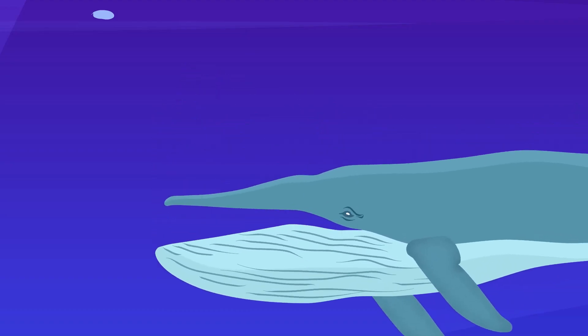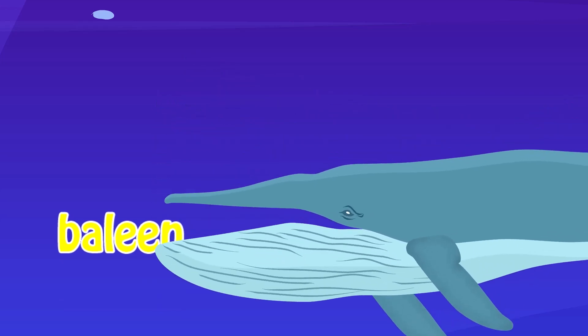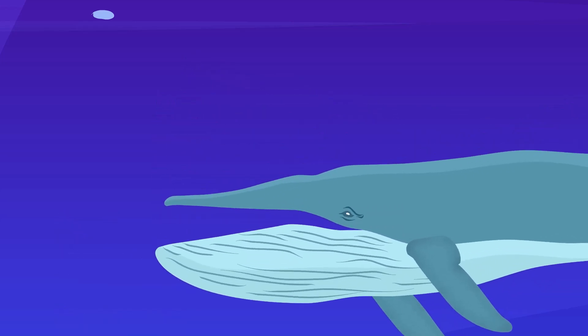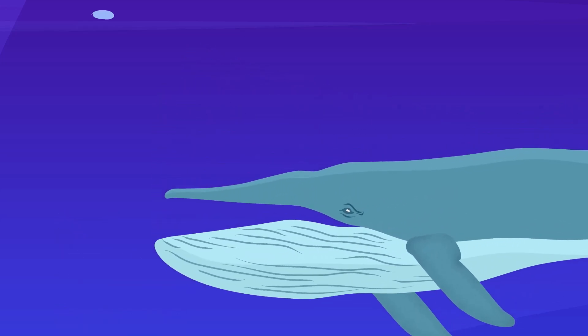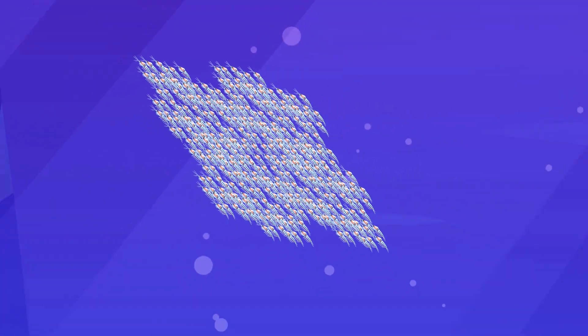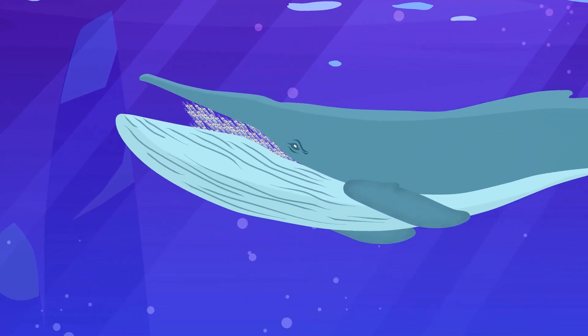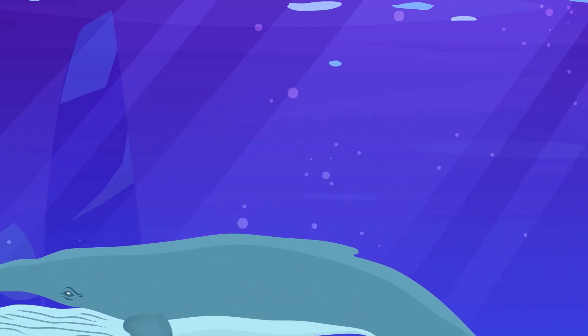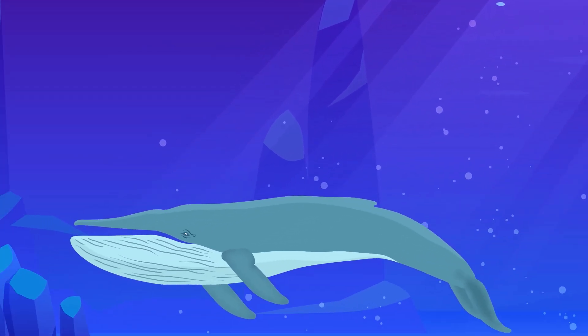Blue whales are baleen whales, meaning they don't have teeth. Instead, they take in enormous gulps of water and krill, and then use their massive tongues to push the water back out through fibrous plates called baleen, trapping the krill inside to be swallowed.